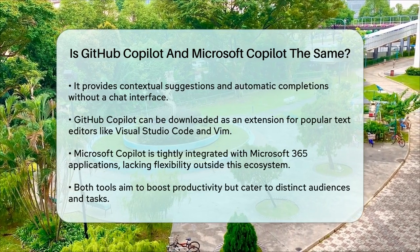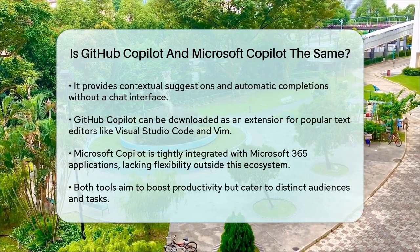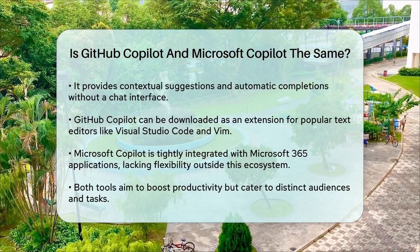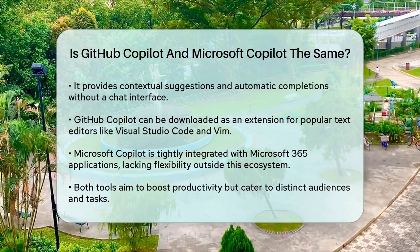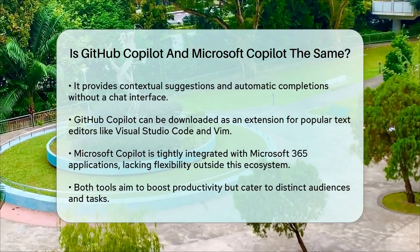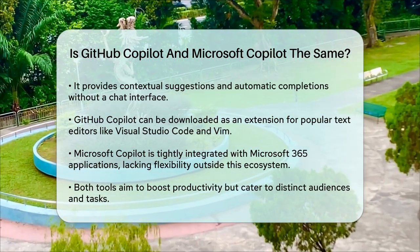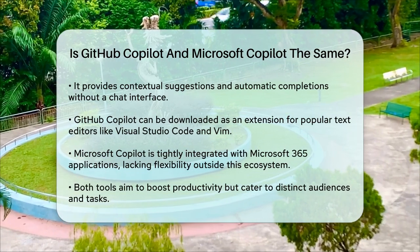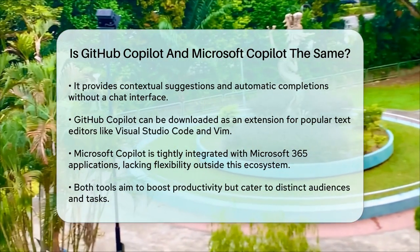So, while both tools use AI to boost productivity, they are clearly designed for different audiences and tasks. GitHub Copilot is your go-to for coding assistance, while Microsoft Copilot is perfect for general productivity within the Microsoft Suite. They are not the same, and each has its unique benefits and functionalities.